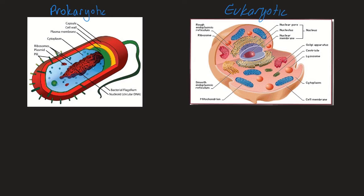Looking at these two diagrams, you can see that the prokaryotic cell is much simpler. It doesn't contain a nucleus, it doesn't contain any membrane-bound organelles, and it's much, much smaller. The eukaryotic cell is far more complex — it contains a nucleus and membrane-bound organelles.